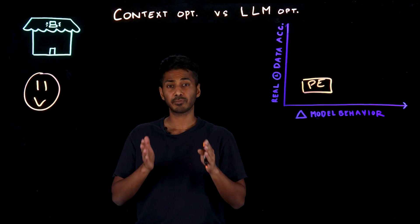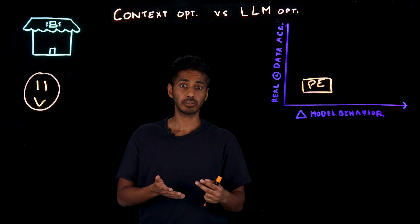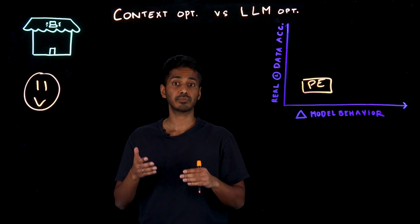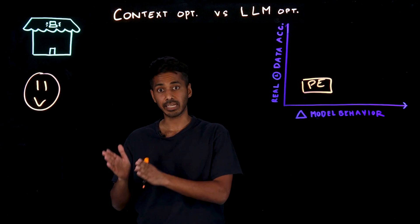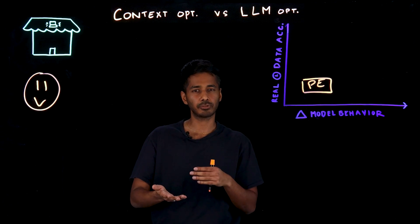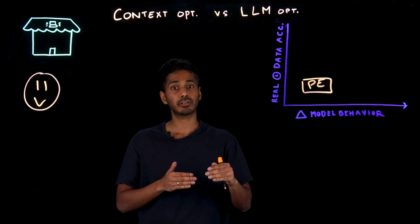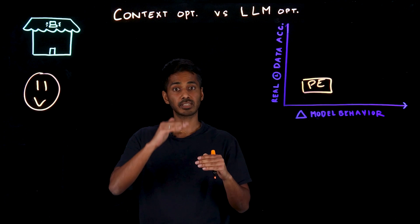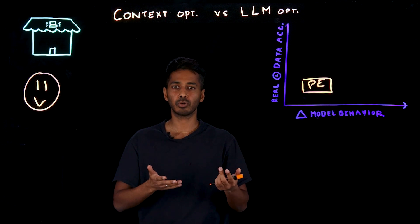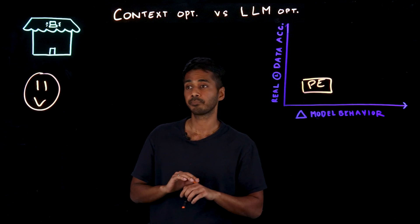Prompt engineering is giving very clear guidelines on what you expect from the model. You can do so by giving some text, you can also give some examples like input and output so that a model can understand what you're really looking for. You can also help the model break down a complex problem into sub-points and make sure it's understanding what you're going after in the long run, which is called chain of thought prompting.